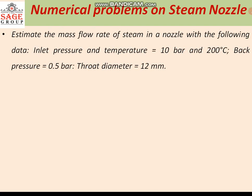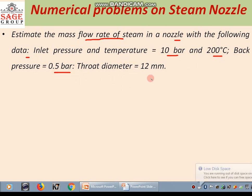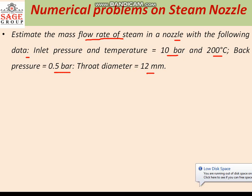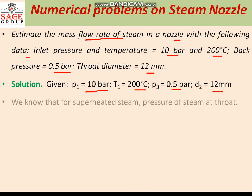We are taking one more problem: estimate the mass flow rate of steam in a nozzle with the following data. Inlet pressure and temperature are 10 bar and 200 degree centigrade, back pressure is 0.5 bar, and throat diameter is 12 millimetre. Here, P1 is 10 bar, T1 is 200 degree centigrade, P3 is 0.5 bar, and D2 equal to 12 millimetre.